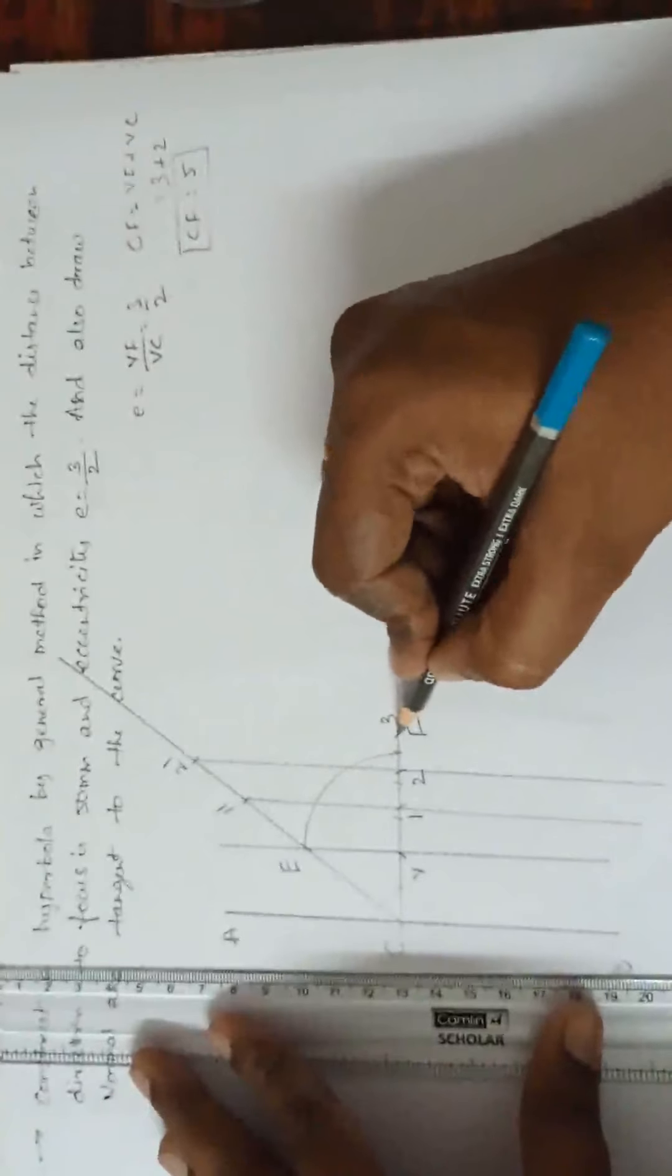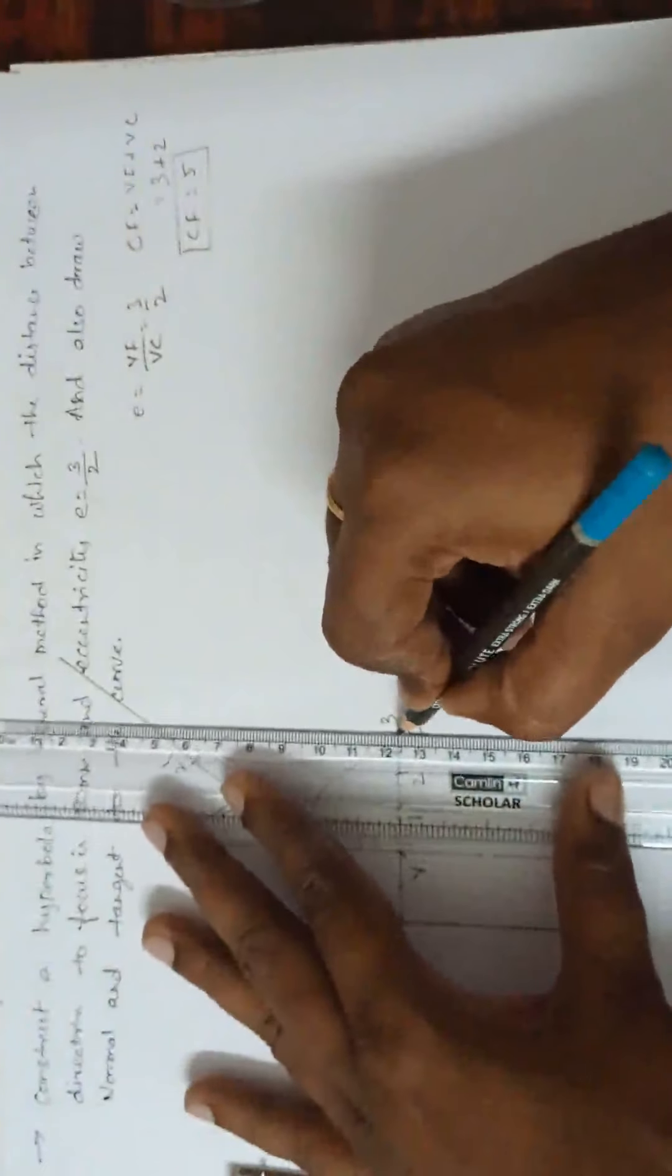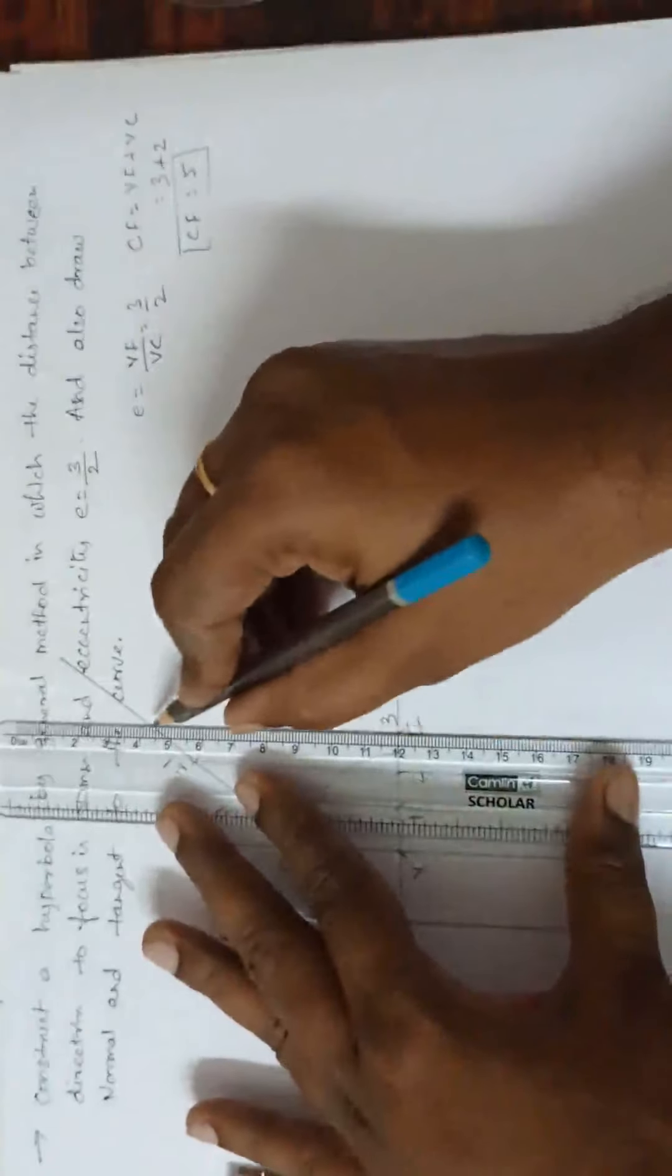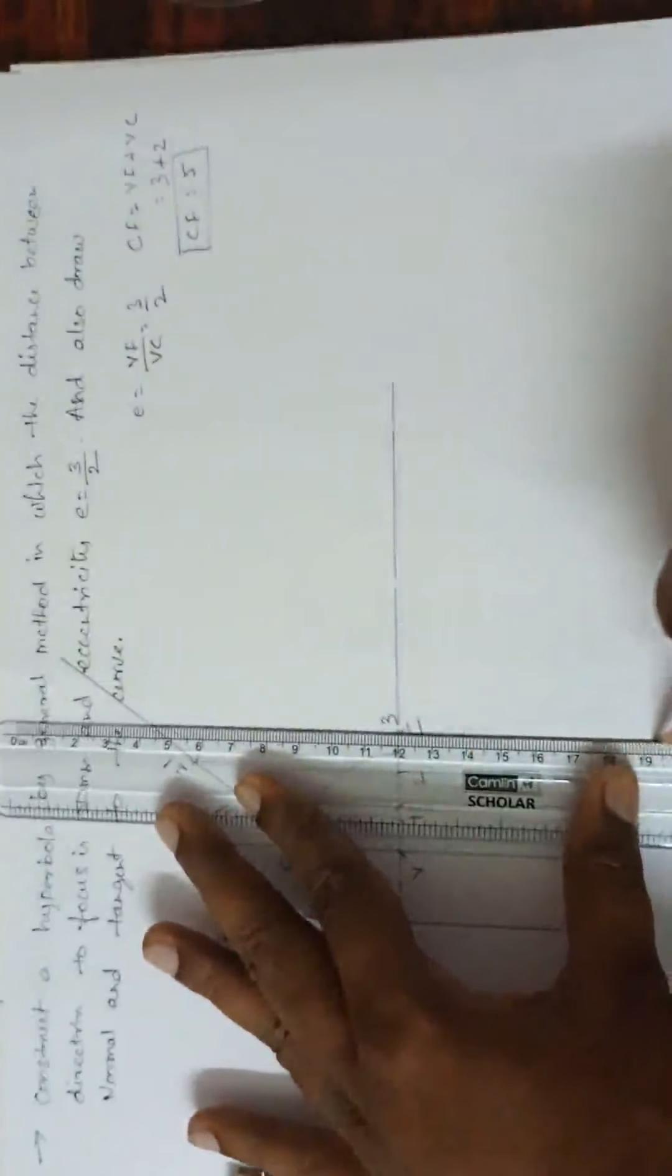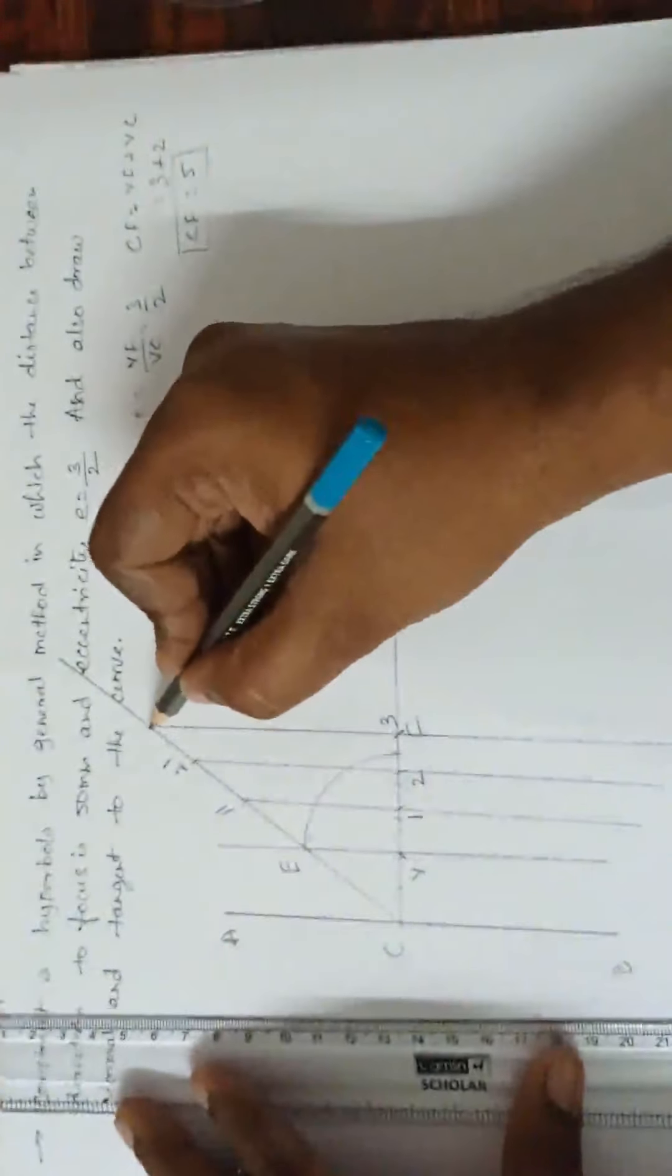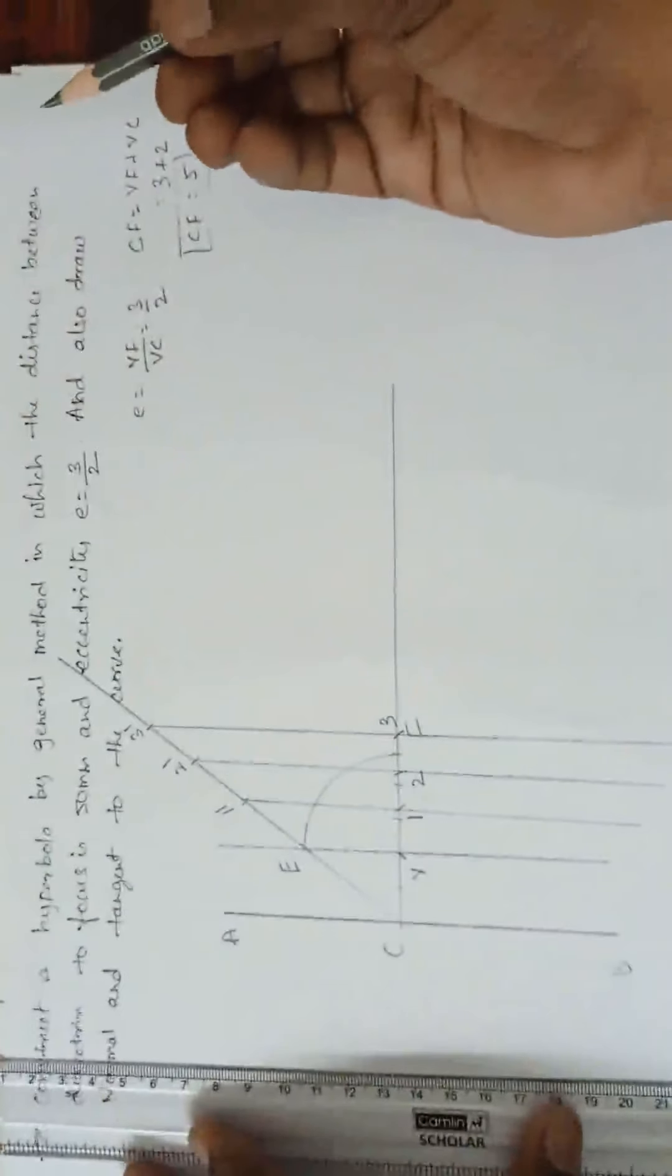Now, from third point. See, this is third point. Now, from the third point, drop the perpendicular line up to CE and extend below. I will call it as 3 dash.